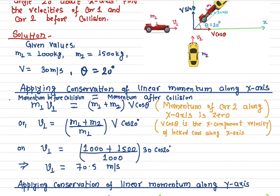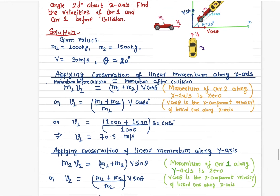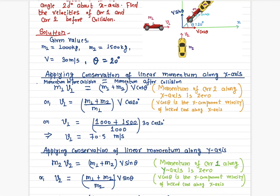Car one has mass 1000 kg and car two has mass 1500 kg. Plugging in all the values, car one was moving at 70.5 meters per second. Now let's find the speed of car two.